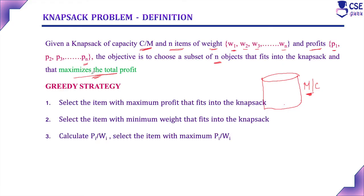The knapsack problem can be solved using the greedy method. The first step is to select the item with maximum profit, since the objective is to maximize total profit. The second step is to select the item with minimum weight, so that more items can be placed into the knapsack, further maximizing total profit.